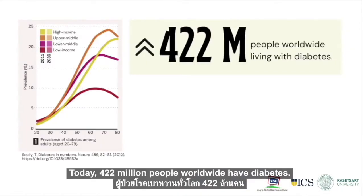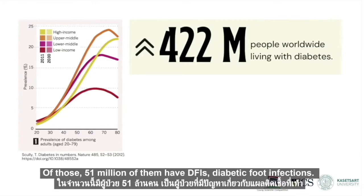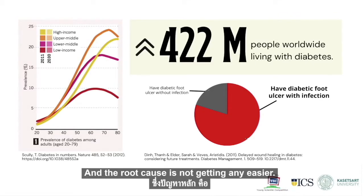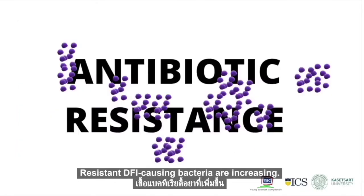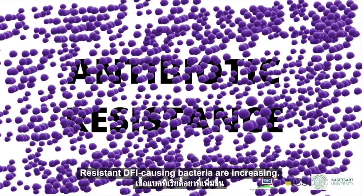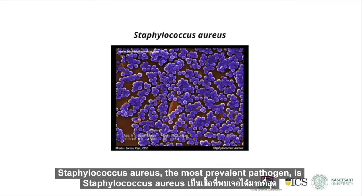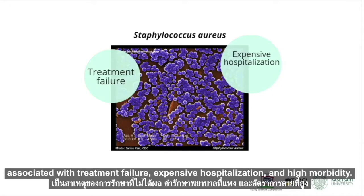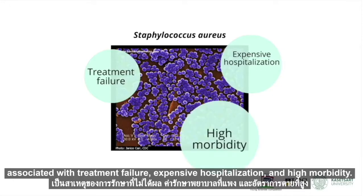Today, 422 million people worldwide have diabetes. Of those, 51 million of them have DFIs — diabetic foot infections. And the root cause is not getting any easier. Resistant DFI-causing bacteria are increasing. Staphylococcus aureus, the most prevalent pathogen, is associated with treatment failure, expensive hospitalization, and high morbidity.